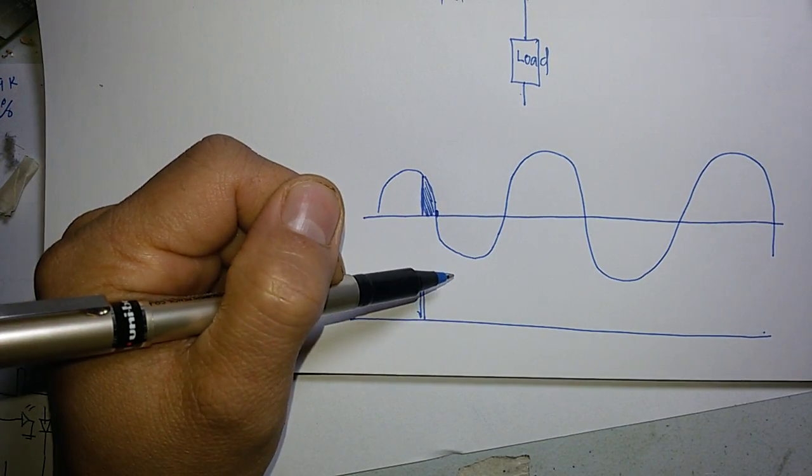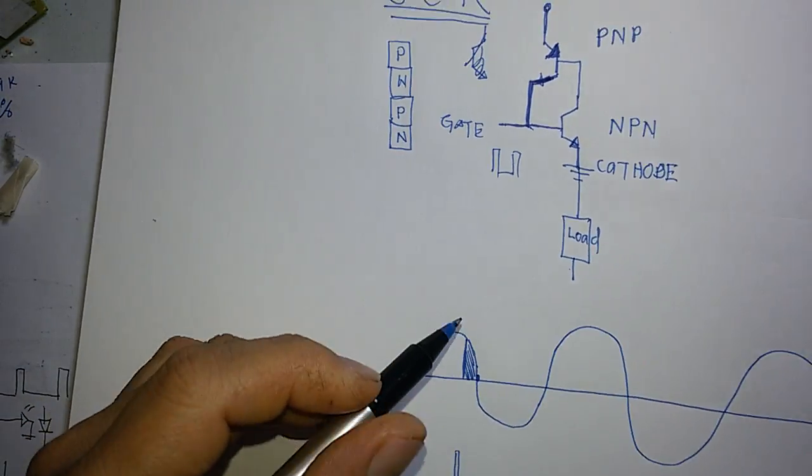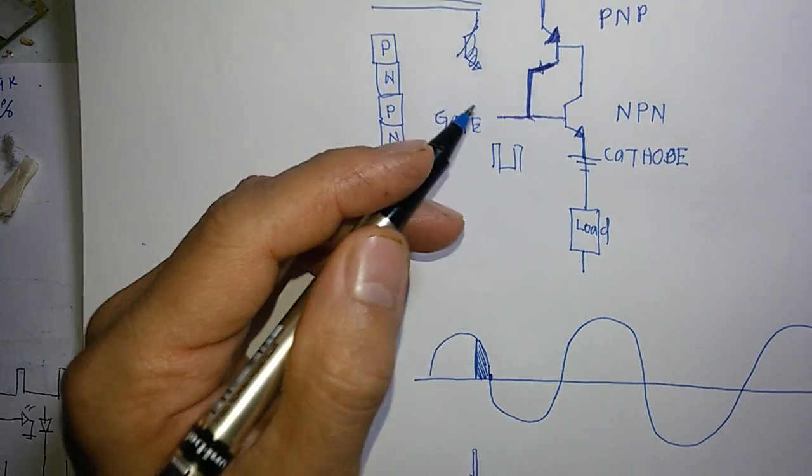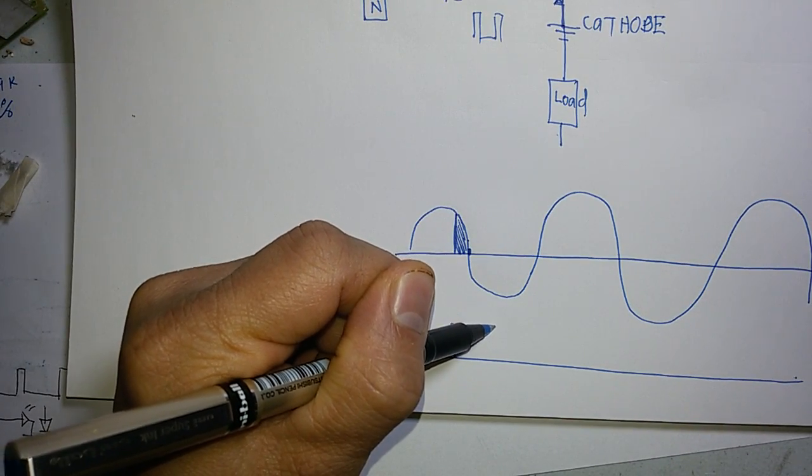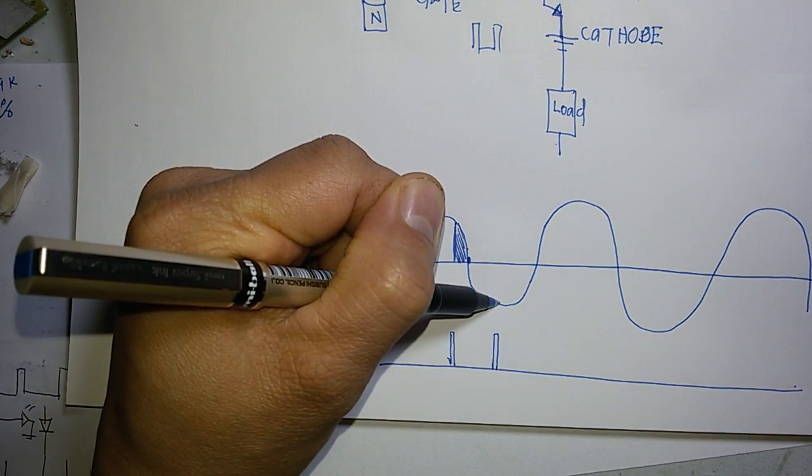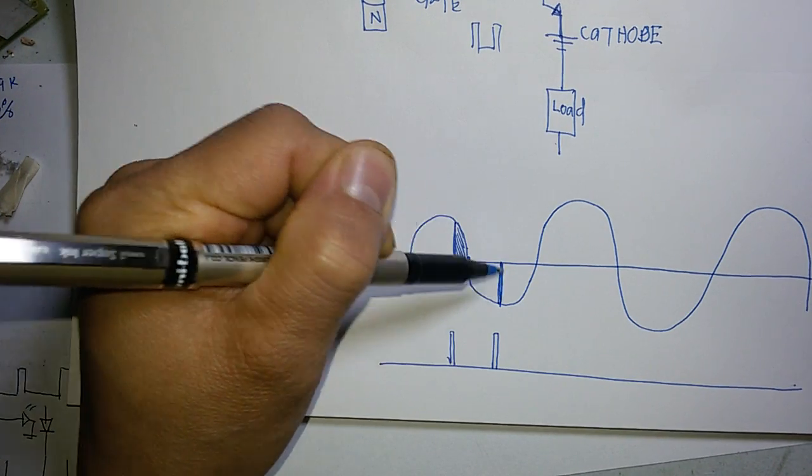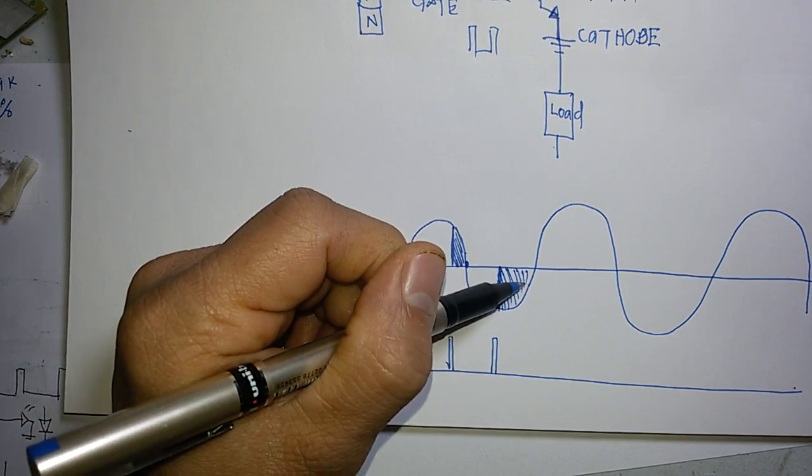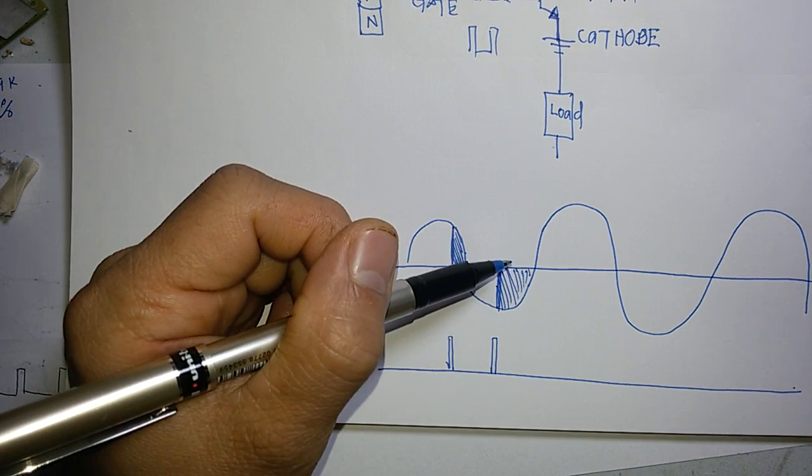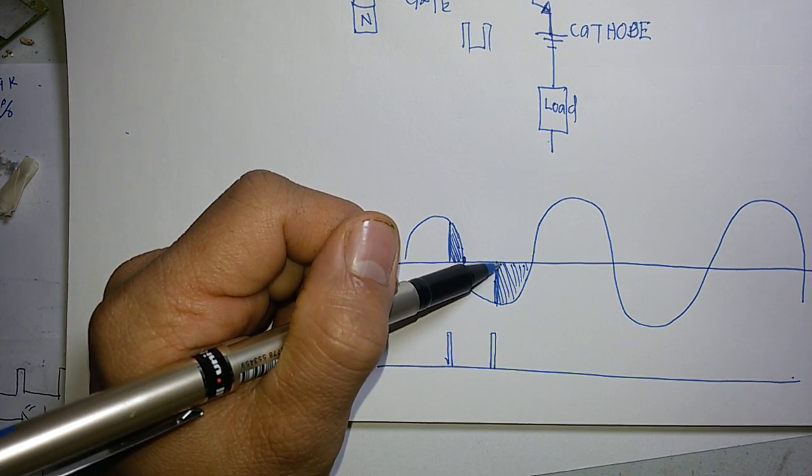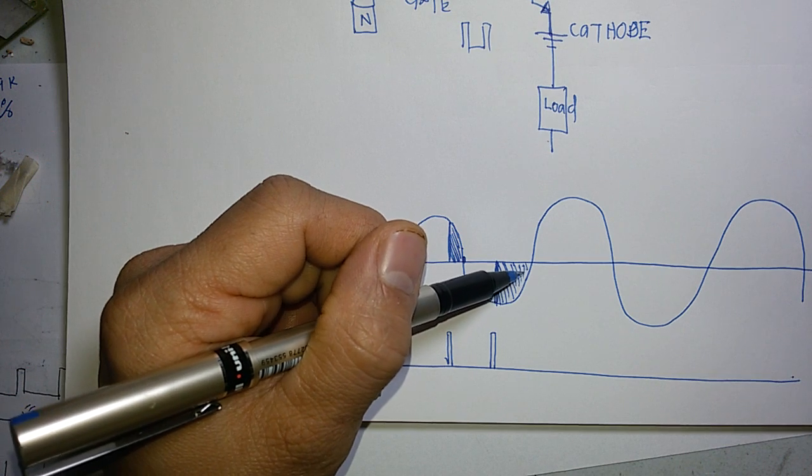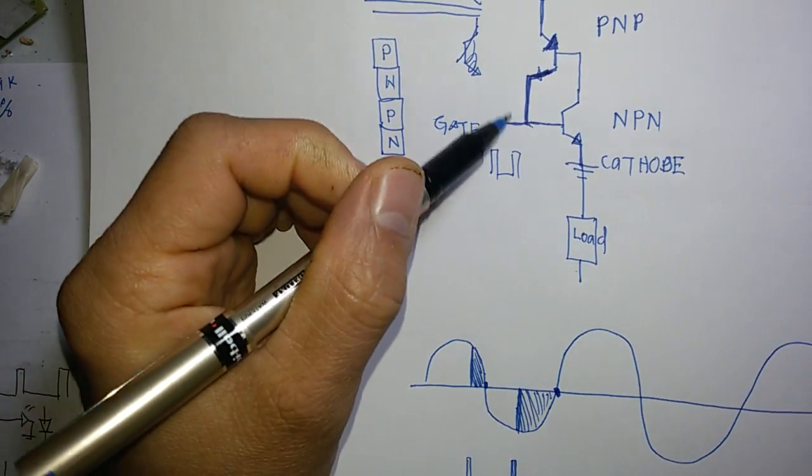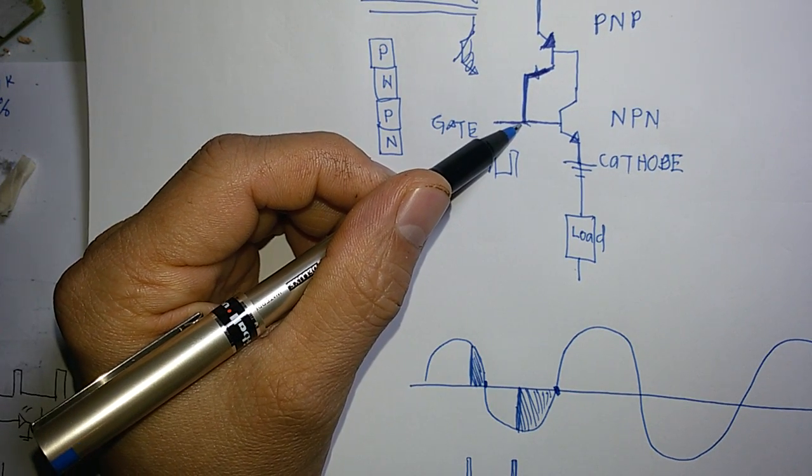So at this moment your SCR will not conduct. You will wait again for the next pulse that would be supplied to your gate in order for your SCR to conduct in AC supply voltage. So for example you are going to pulse it here, more earlier, so you make your SCR conduct earlier. So at this moment the power delivered to your load also is adjusted. So this is now 50% of the power that you are going to deliver to your load because you trigger it much earlier. Now at this moment also the SCR will not conduct because your gate is not supplied with the positive voltage.